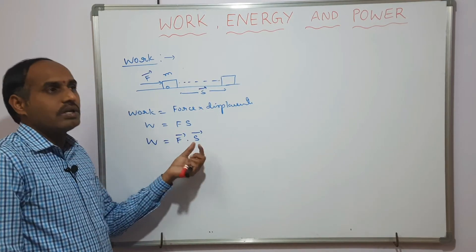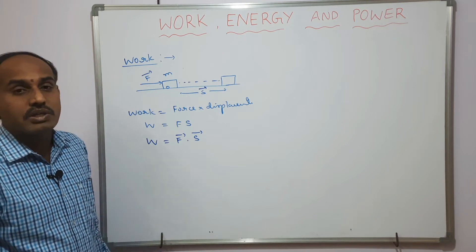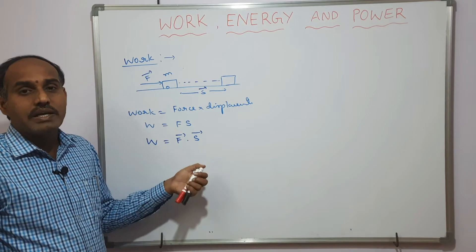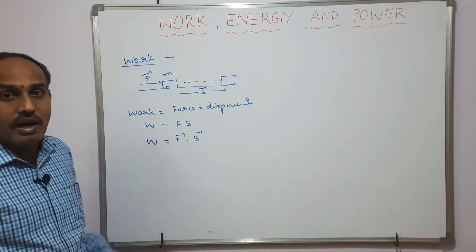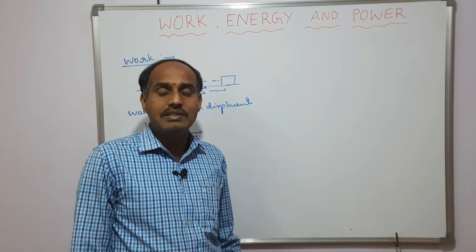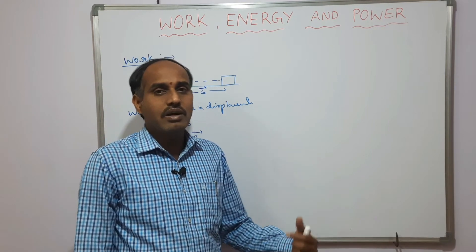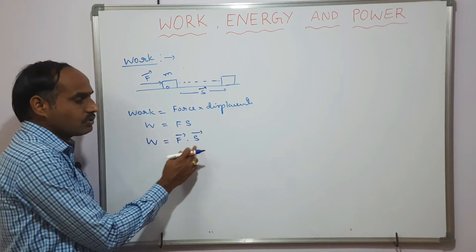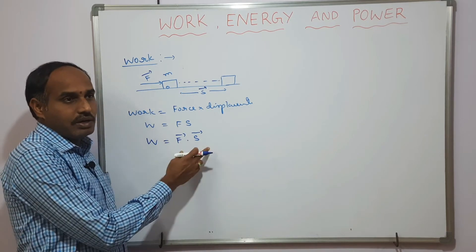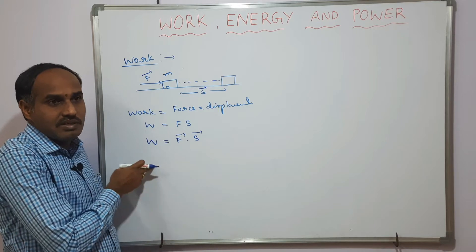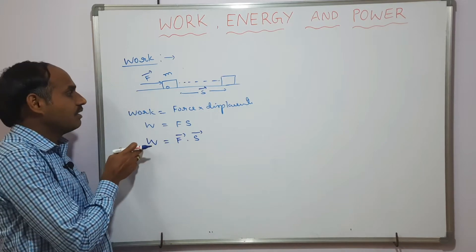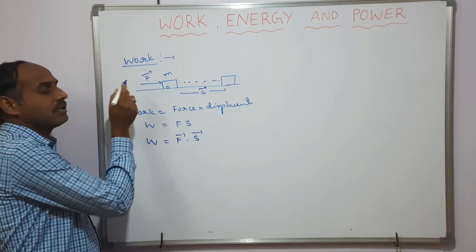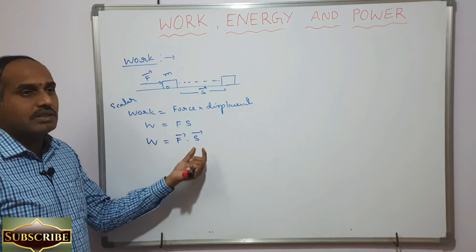Why do we take only the dot product and not the cross product? The dot product of two vectors is a scalar quantity, and the cross product of two vectors is a vector quantity, as discussed in the previous chapter on vectors. Since force and displacement are vectors, taking their cross product gives a vector result, but work done is a scalar quantity, so we cannot take the cross product.